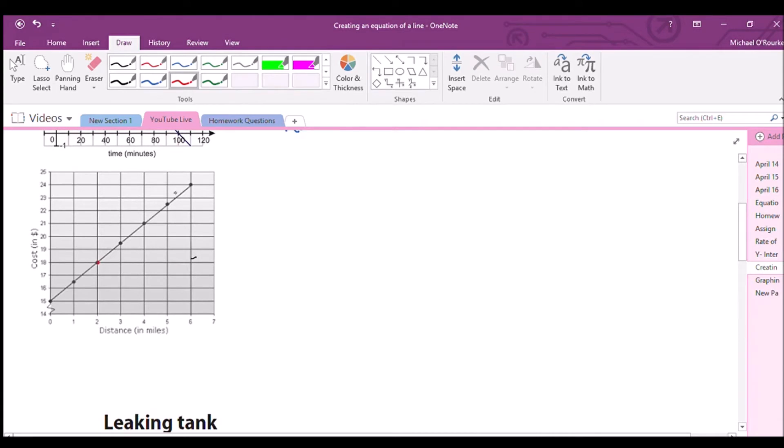Now this one here. First thing we do, identify our M value. Our M value. So let's make my triangle. So this is up one, two, three and over one, two. So three over two is our M.